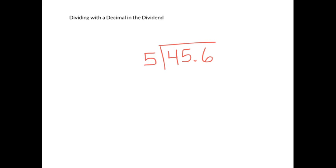Okay, so if your dividend has a decimal, you need to start by taking that decimal point and putting it straight up into your quotient. That's all we have to do that's different, and then your long division is going to continue the same way.